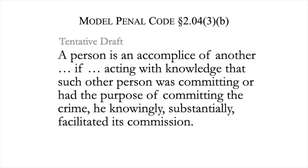An early draft of the relevant Model Penal Code provision lowers the level of culpability needed to convict an accomplice. A person is an accomplice of another if, acting with knowledge that such other person was committing or had the purpose of committing the crime, he knowingly substantially facilitated its commission.